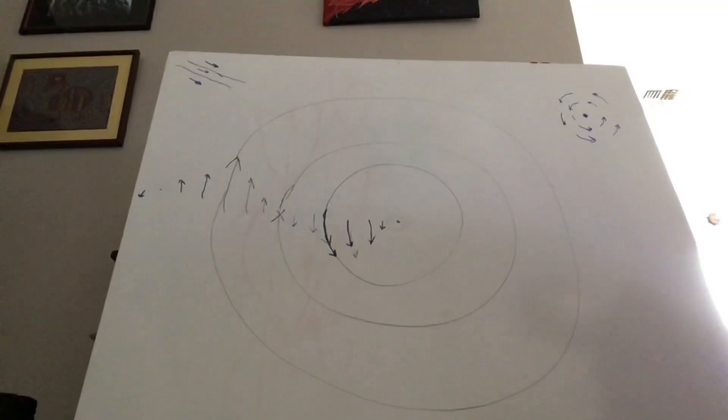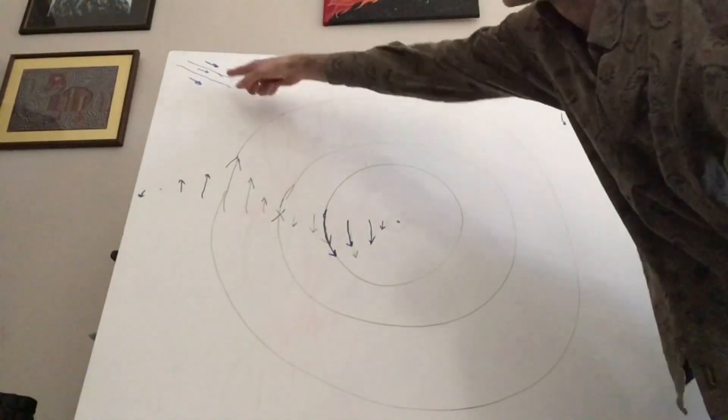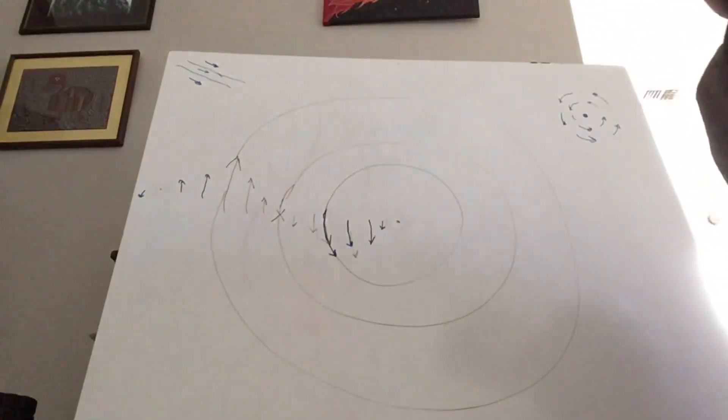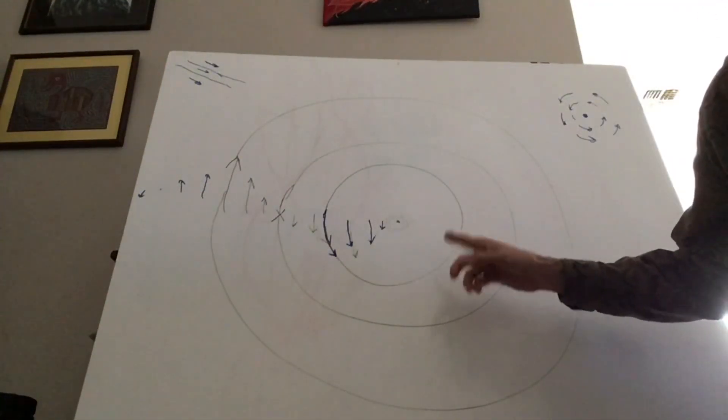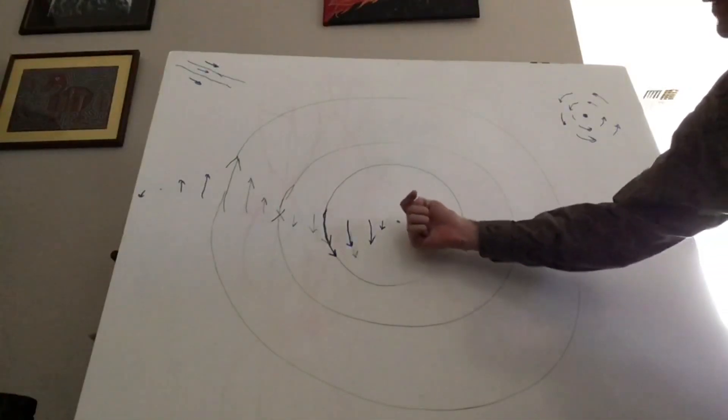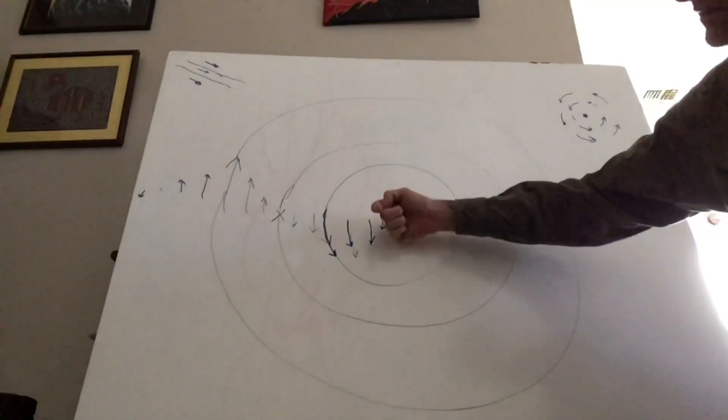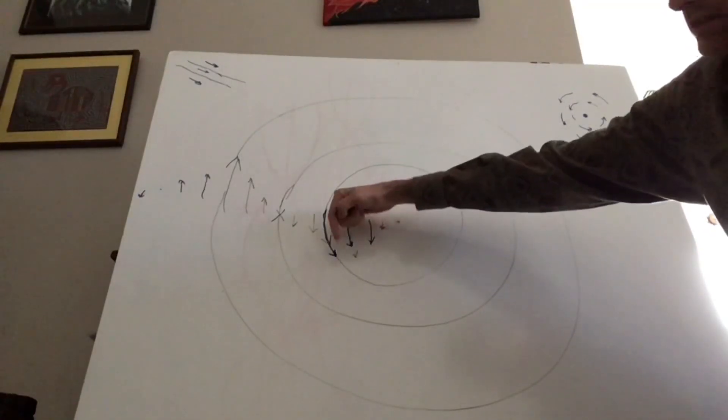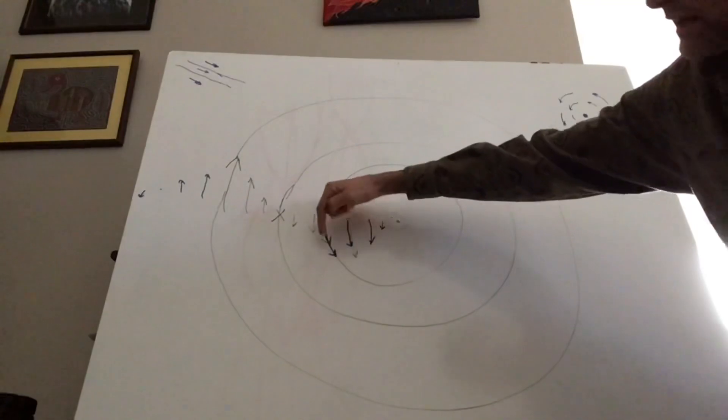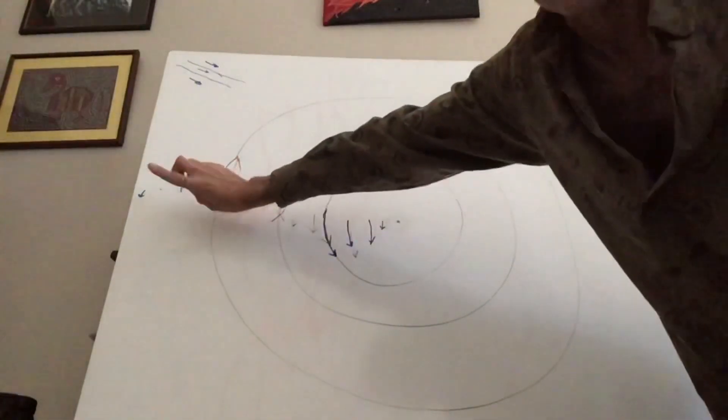But what the mainstream sees is current filaments in space where the magnetic field is along the filament. And now, here's where Don Scott's model comes in because what he's showing is that the magnetic field at the center is along the filament and then it starts to twist more and more until it's this way and then that way up and around.